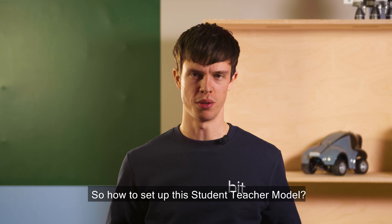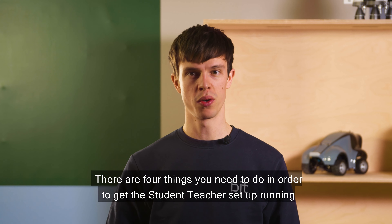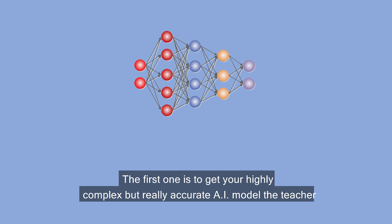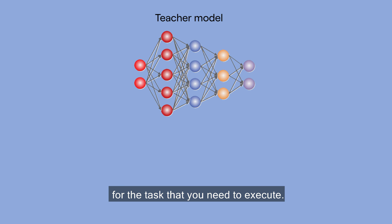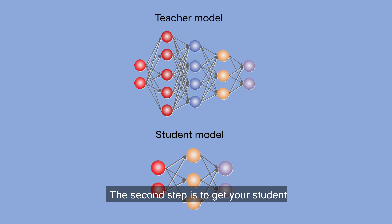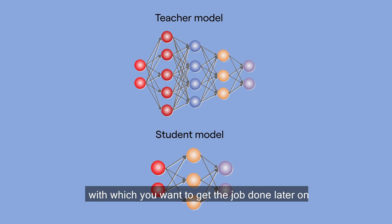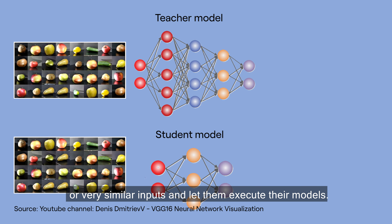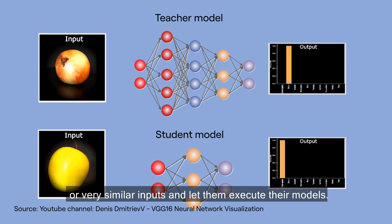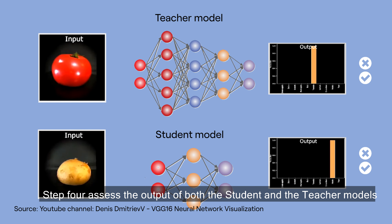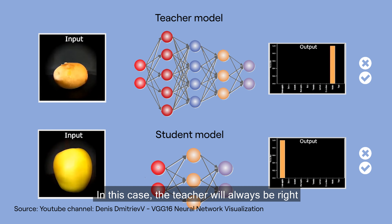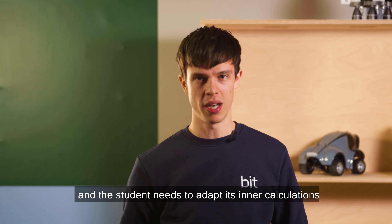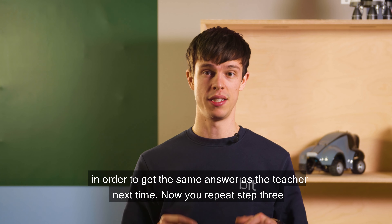How to set up this student teacher model? There are four things you need to do in order to get the student teacher setup running. The first one is to get your highly complex but really accurate AI model, the teacher, for the task that you need to execute. The second step is to get your student, your own more simple AI model with which you want to get the job done later on. The third step is to give them both the same or very similar inputs and let them execute their models. Step four, assess the output of both the student and the teacher models. In this case, the teacher will always be right and the student needs to adapt its inner calculations in order to get the same answer as the teacher next time.